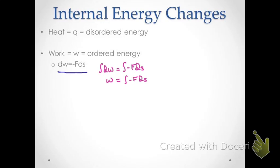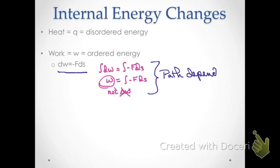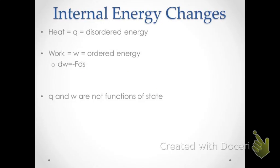One important thing to note is that when we integrate dW, we get W — not delta W, which is what we use for something like delta U. While internal energy is a function of state and is path independent, this is not true of work. Work very much depends on the path. Q is also not a function of state. We're going to spend our time in this video talking about work.